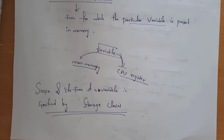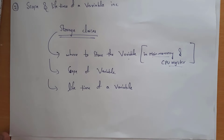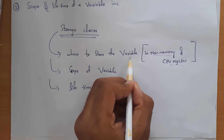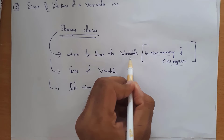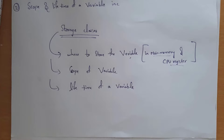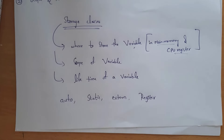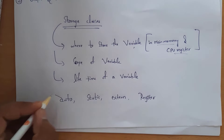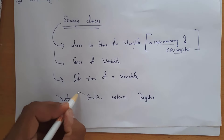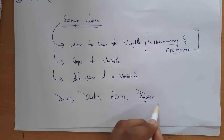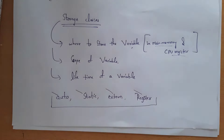Scope and lifetime of a variable is specified by storage classes. Storage classes are used to specify the way to store a variable — either in main memory or in a CPU register — and also to specify the scope and lifetime of a variable. Storage classes are classified into four types: auto, static, extern, and register.